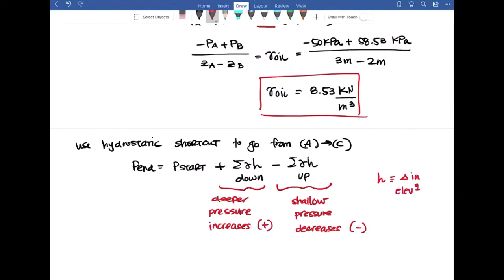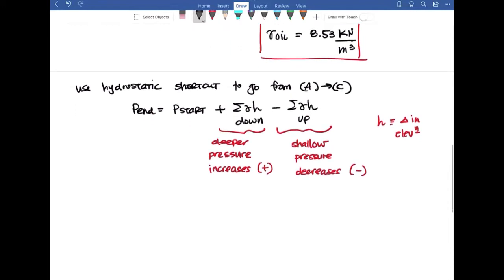Now the H is just signifying your change in elevation. I like to still keep my Zs and use those, but you can substitute them for Hs for the change in elevations, whatever you prefer. In this particular example, I'm going to end at C. So I'm going to say end at C and we're going to start at A. So we're basically moving down our system.